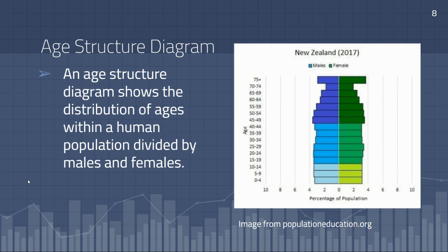These limiting factors also relate closely to human populations and how they can be impacted and changed over time. One thing we discussed specifically related to human populations were age structure diagrams. An age structure diagram shows the distribution of ages within a human population divided by males and females, and can be constructed for any country. When the proportions of individuals in each age category are relatively equal — as we can see with New Zealand — the population is fairly stable and not experiencing massive population growth.